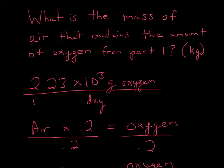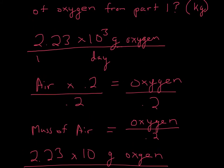If all we had was this, then we just have this equation, and we divide by 0.2. The 0.2's would cancel, divide by here, 0.2, and so oxygen divided by 0.2 would give us the mass of air.